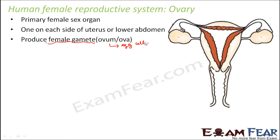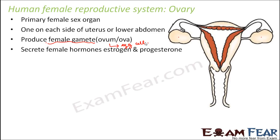In sexual reproduction, fusion happens between the male gamete and female gamete. In human beings, fusion happens between the sperm and the ovum. The ovary also secretes female hormones like estrogen and progesterone, similar to how the testes secrete the male hormone testosterone. Progesterone mainly helps a female during pregnancy and delivery, while estrogen takes care of female reproductive activities — including secondary sexual characters like breast enlargement, hair growth in the genital area and underarms, and the menstrual cycle.